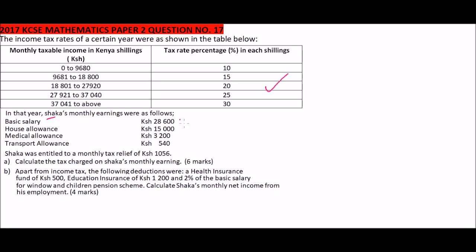Shaka's monthly income consists of a basic salary of twenty-eight thousand six hundred shillings, a house allowance of fifteen thousand shillings, a medical allowance of three thousand two hundred shillings, and a transport allowance of five hundred and forty shillings. He is also entitled to a mandatory tax relief of one thousand and fifty-six shillings.